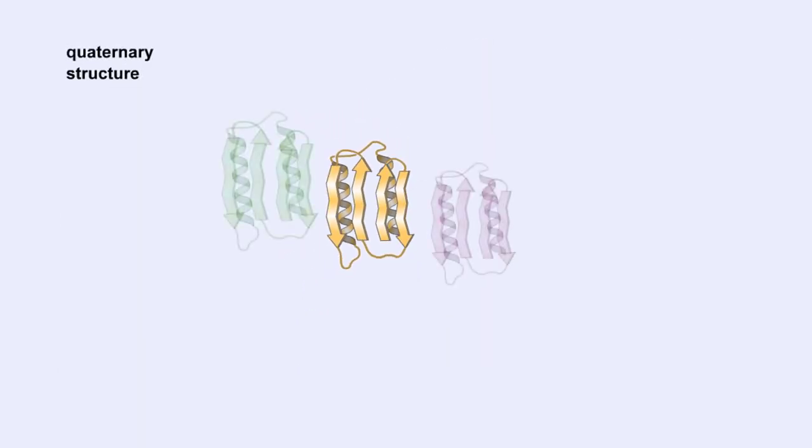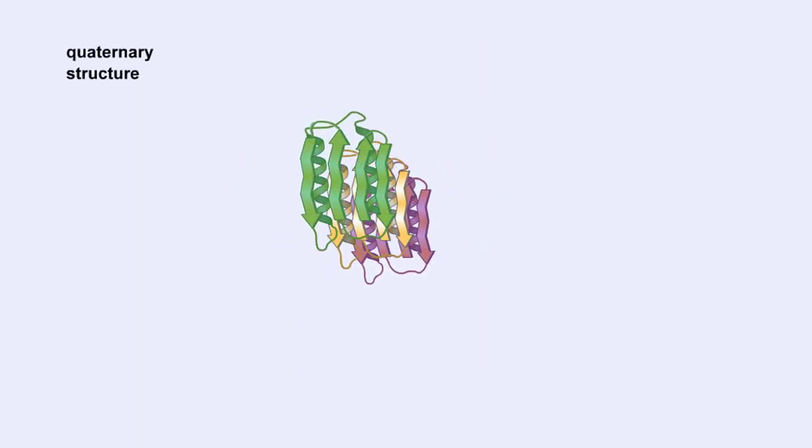When two or more polypeptide chains participate in the final shape of a protein, the resulting structure is called the quaternary structure.